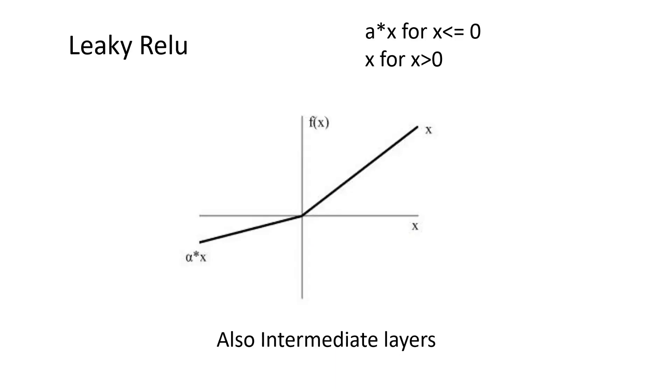The third one is leaky ReLU. It's similar to ReLU except the fact that when there is negative value instead of being directly 0, it takes alpha, alpha into x where alpha is a very small value close to 0. So the idea is to preserve the beauty of ReLU but at the same time not have 0 as the gradient here. So that was the idea. It is also used in the intermediate layers. The logic is almost the same as ReLU but it's just a bit better.